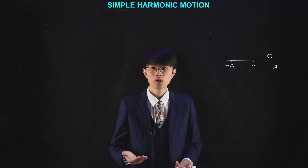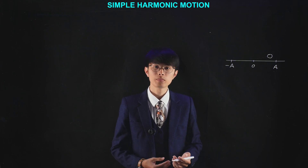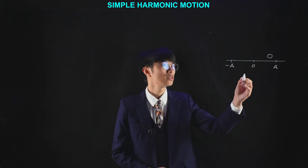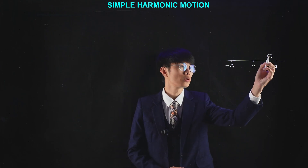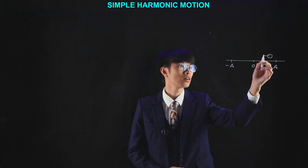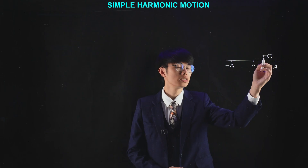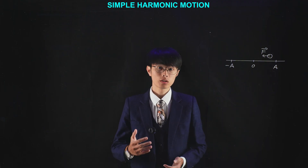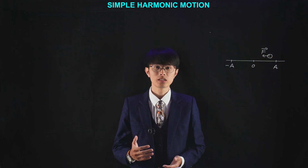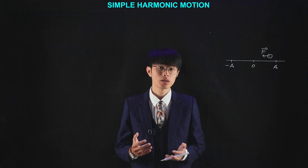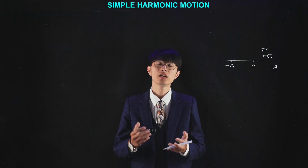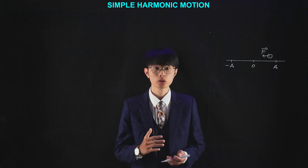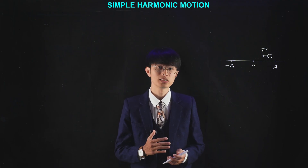In the last section, we know that in a periodic motion, there's always a restoring force acting on the object, pulling toward equilibrium. In order to be considered as simple harmonic motion, that force has to be proportional to the displacement.